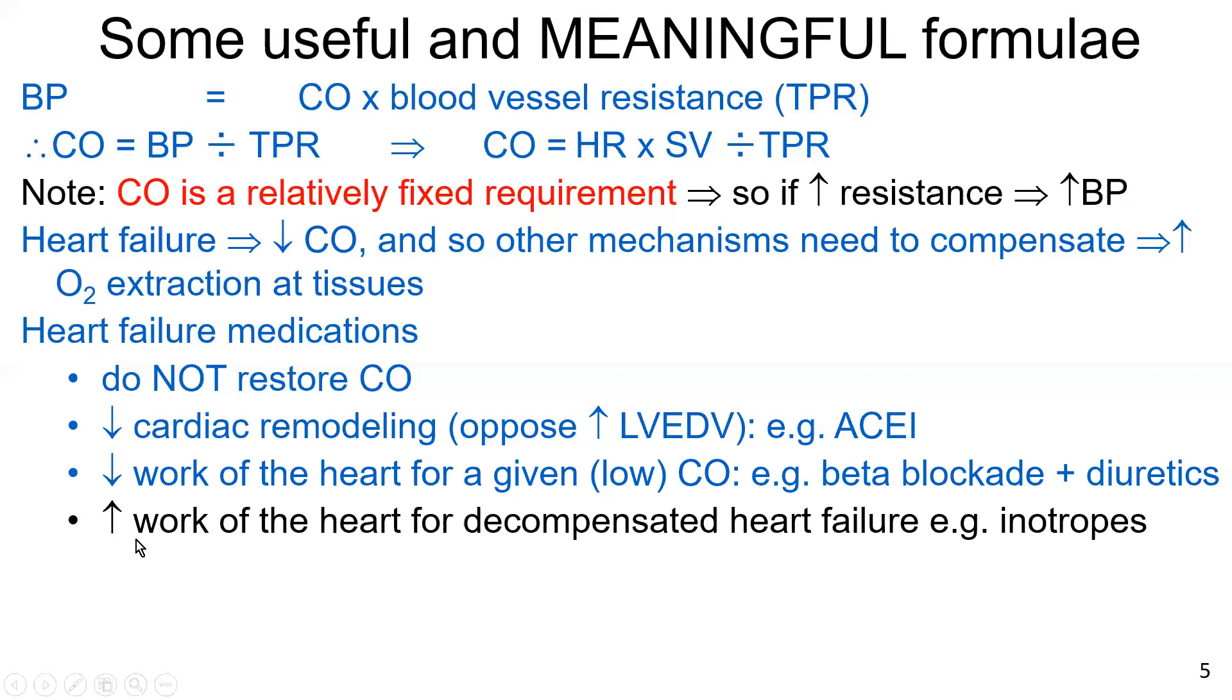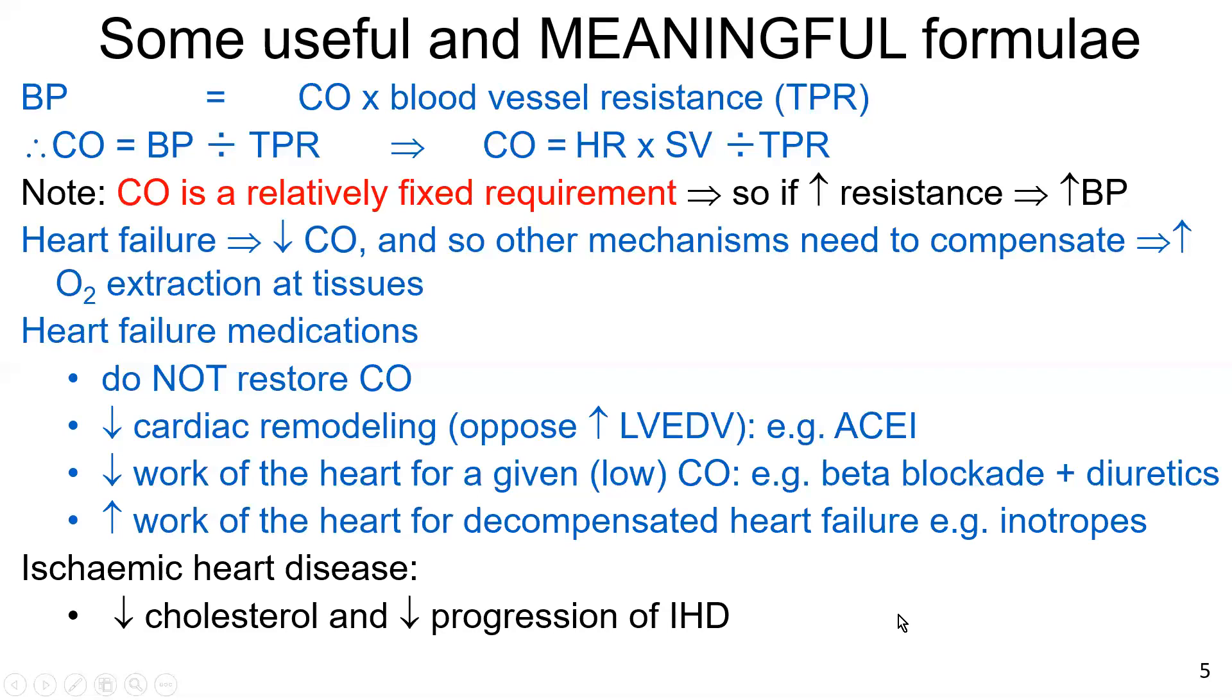Sometimes when palliation is needed, in heart failure, a different class of medications, the inotropes may be applied to increase the work of the heart in the situation where someone has decompensated heart failure. In ischemic heart disease, clearly we're trying to slow the progression of ischemic heart disease by dealing with hypercholesterolemia. And sometimes coronary artery vasodilation must be treated and they're the anti-anginals.